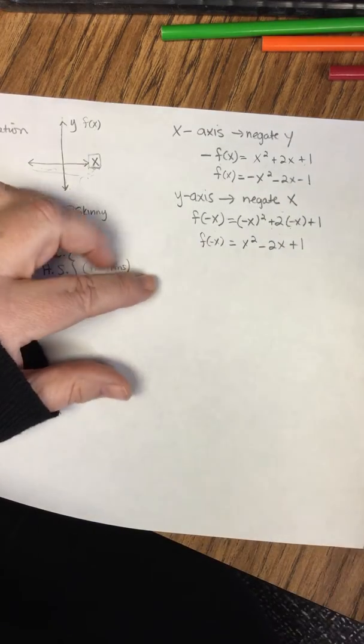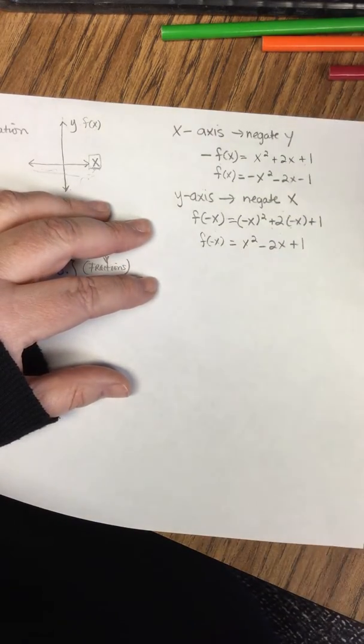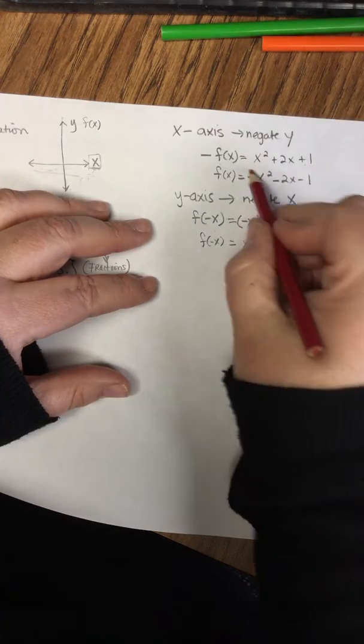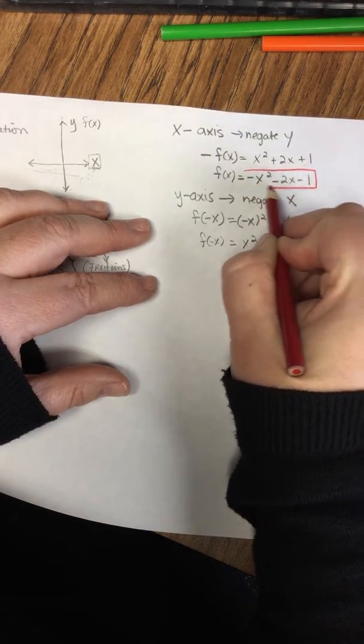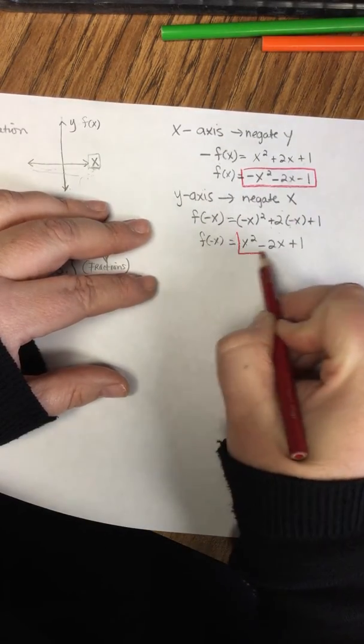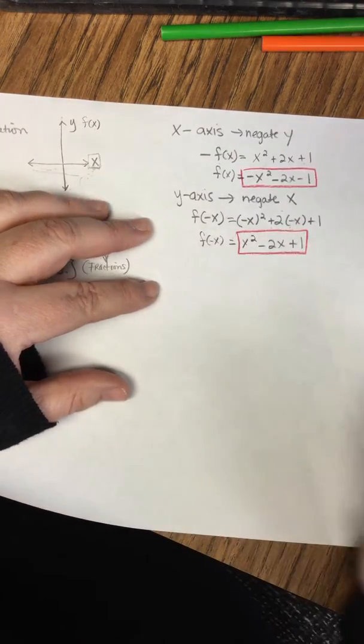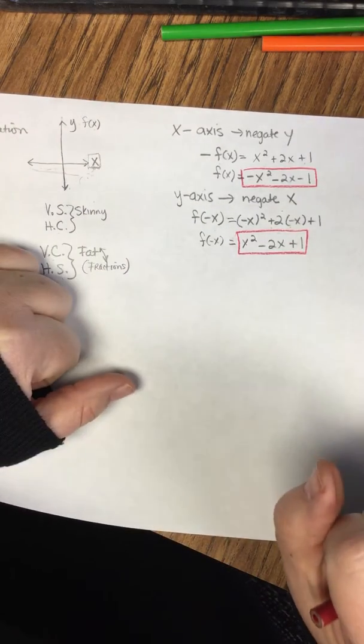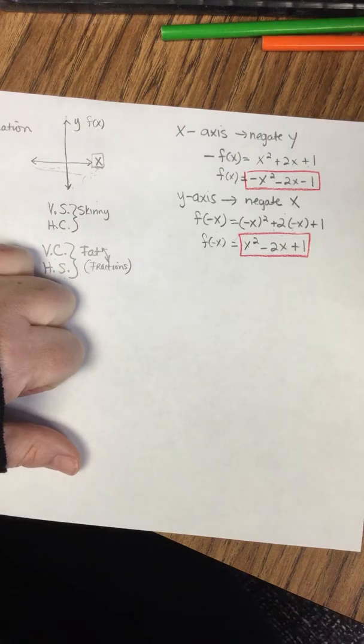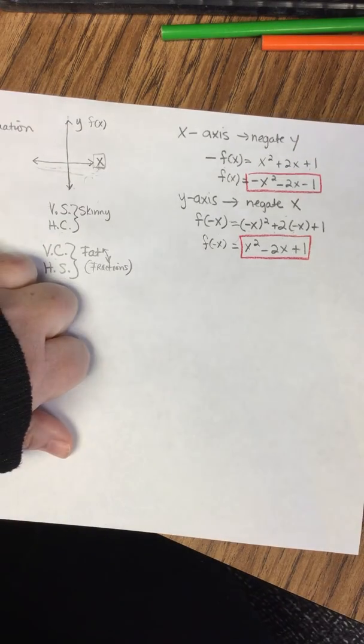So some of these change, some of them don't. As you can see, when I compare these, they are not the same. I did not just simply flip the signs to the opposite. So one is negating the y, one is negating the x.